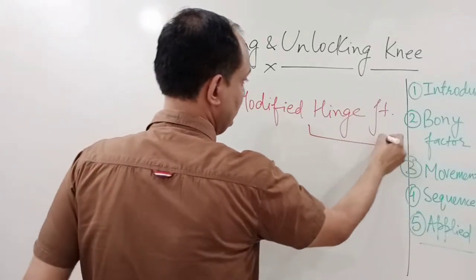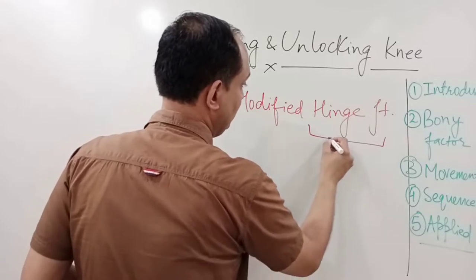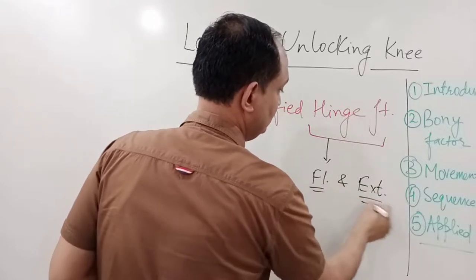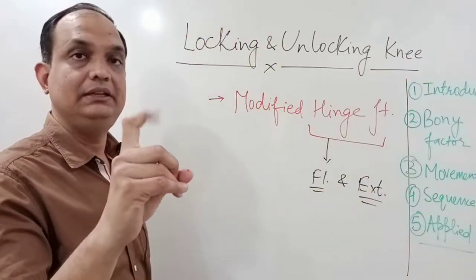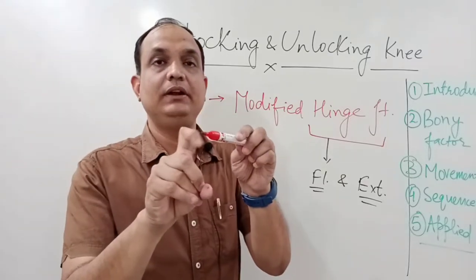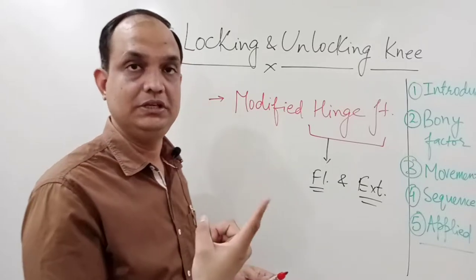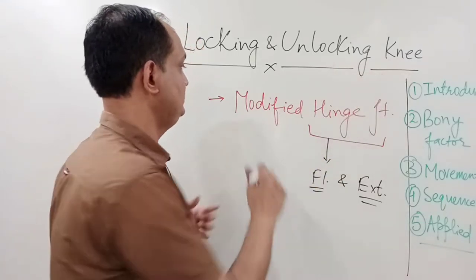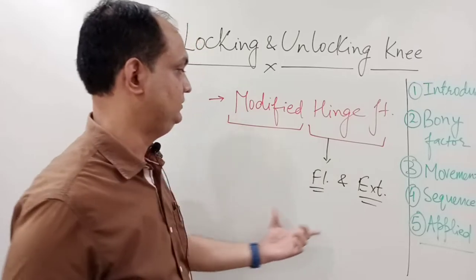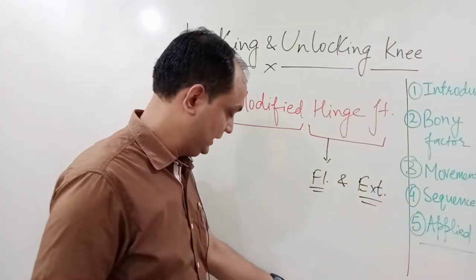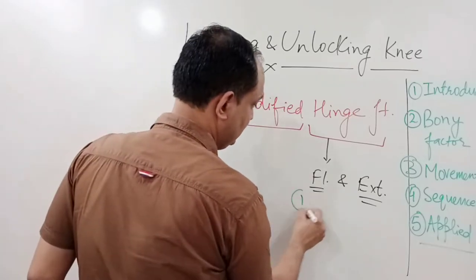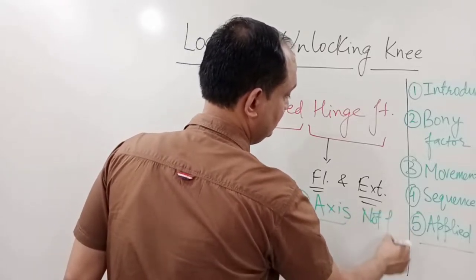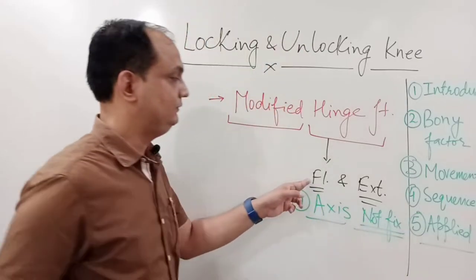When you talk about a normal hinge joint, you have only flexion and extension. These movements take place around a transverse axis, as in a classical hinge joint like the interphalangeal joint. But in the knee, it is a hinge joint, but it is not a simple hinge joint — it is a modified hinge joint. Because the axis is not fixed in the case of the knee joint when you are doing flexion and extension.